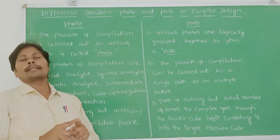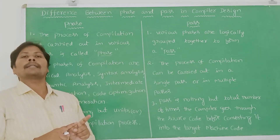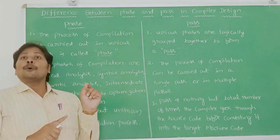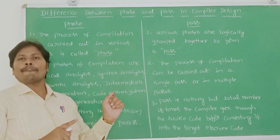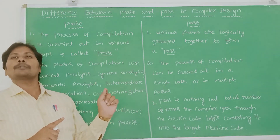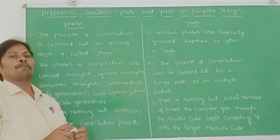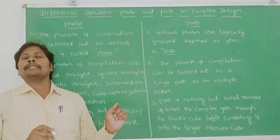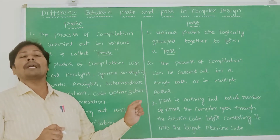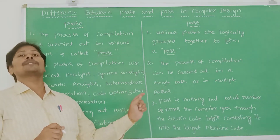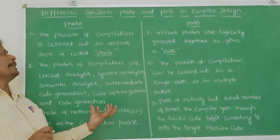These phases are grouped together to form a pass. There are two types of passes: one is the single pass and the second one is multi-pass. In the single pass compiler, the compiler goes through the source program only once, whereas in the multi-pass compiler, the compiler goes through the source program multiple number of times. Simply, pass is the total number of times the compiler goes through the source program before generating the target code.